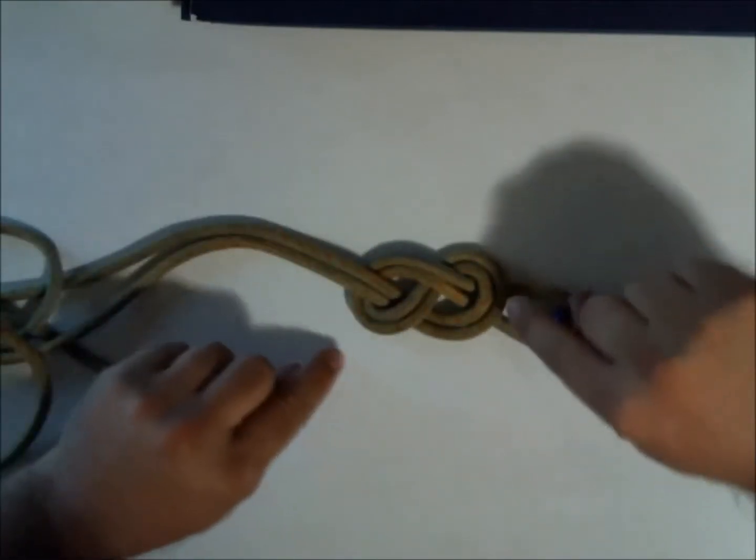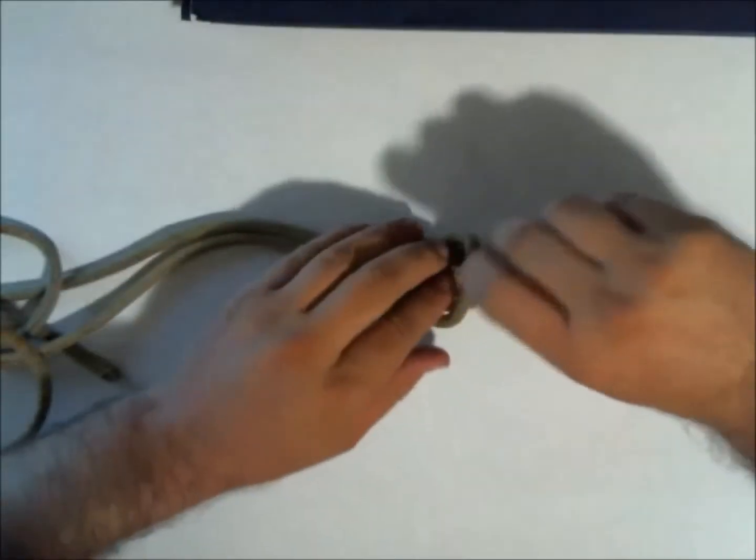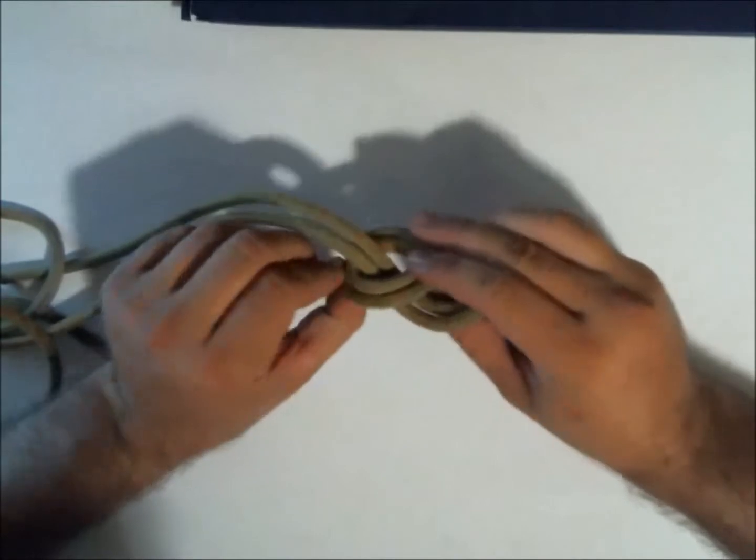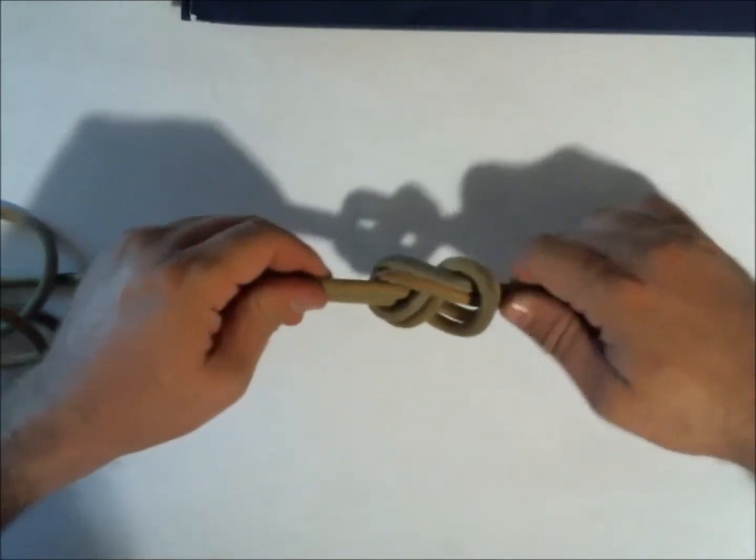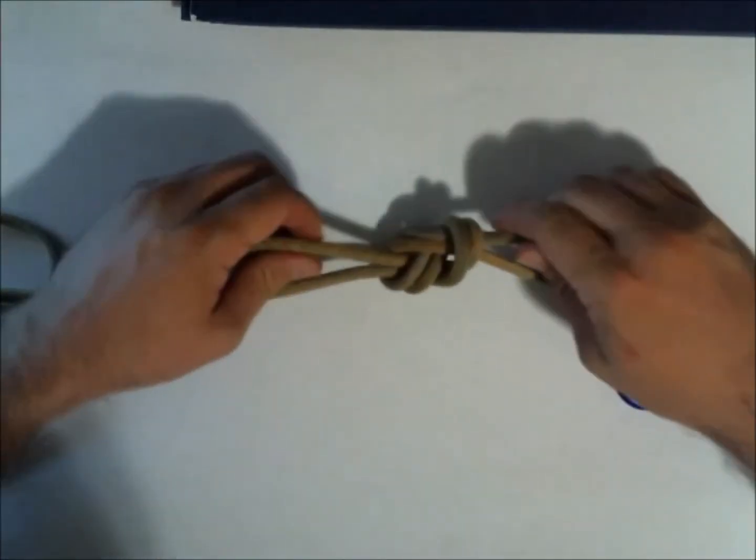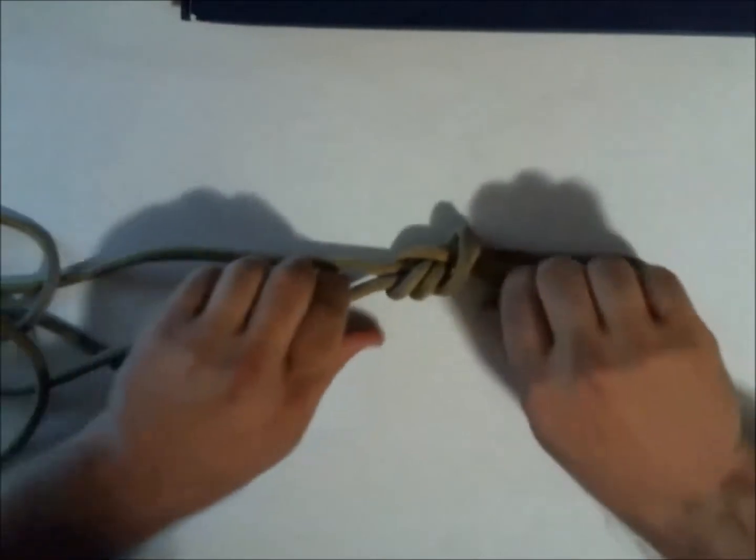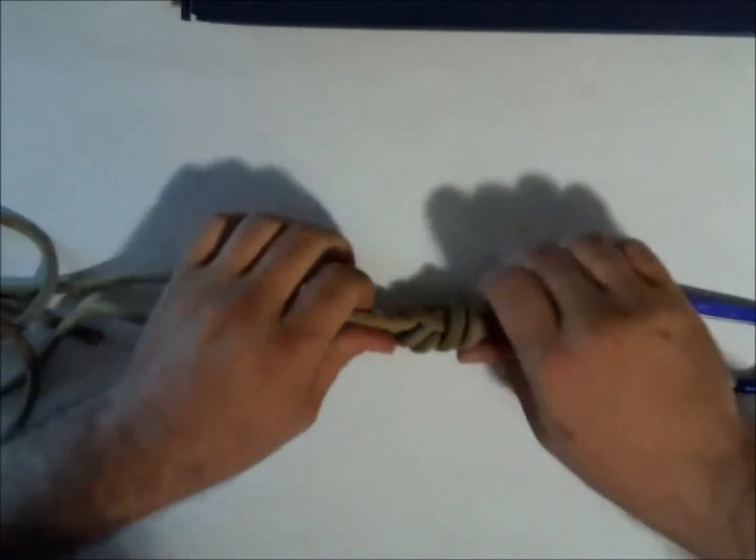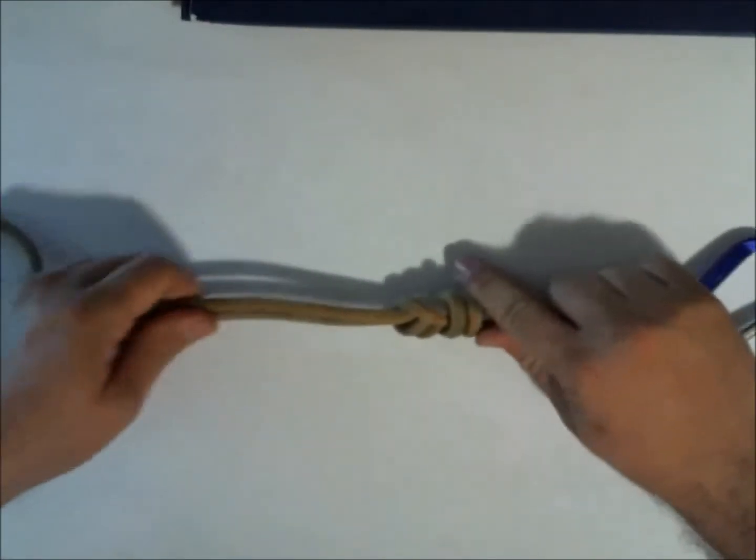Now when I pull the knot tight, I'm going to take this outside part and pull it up, and this outside part and pull that out. I'm going to pull it tight and grab any two strands of rope and pull, any two strands of rope and pull. And there's our tight double figure eight knot.